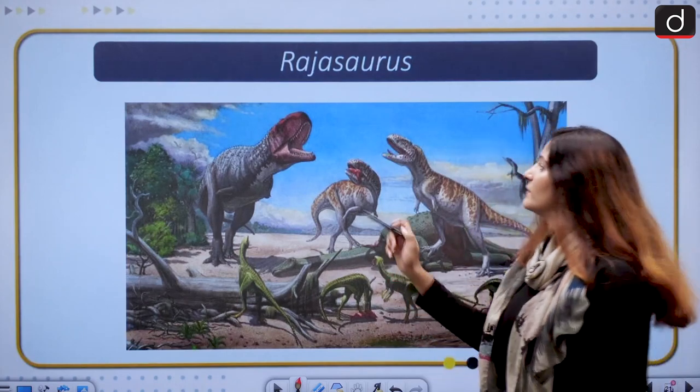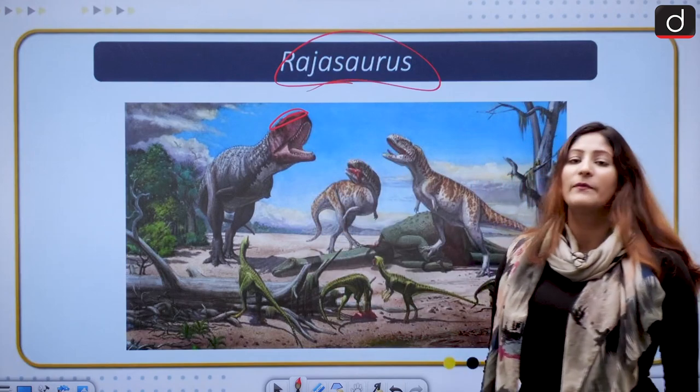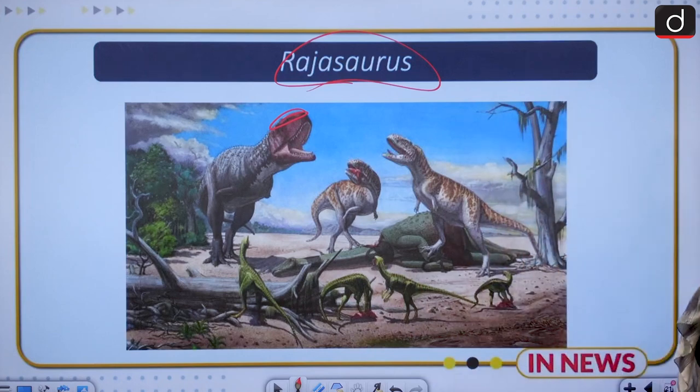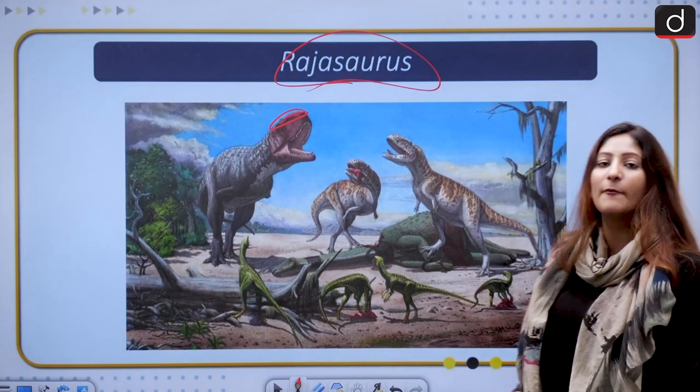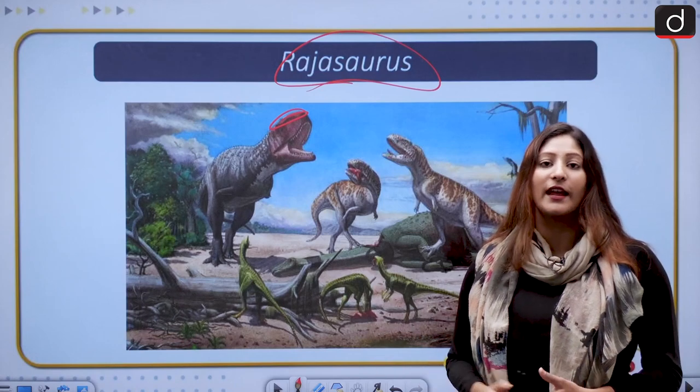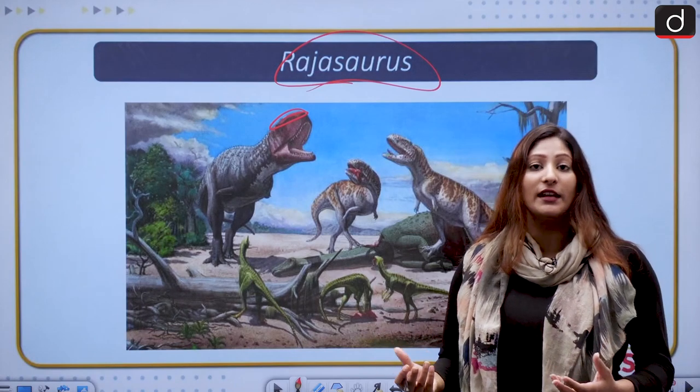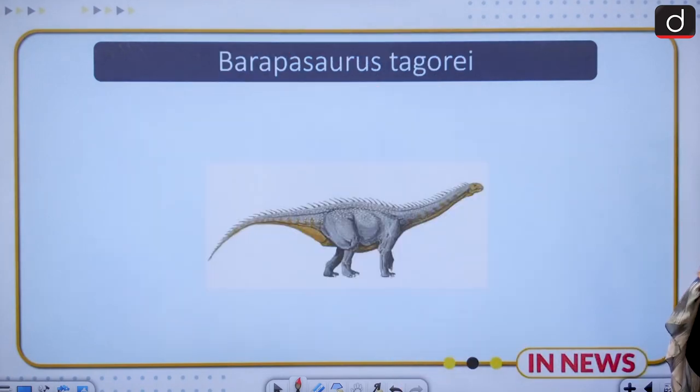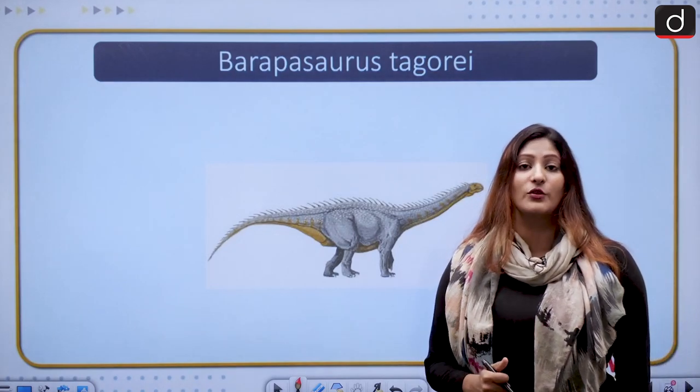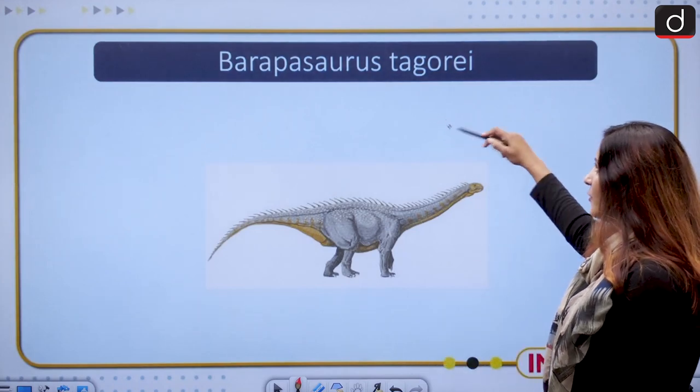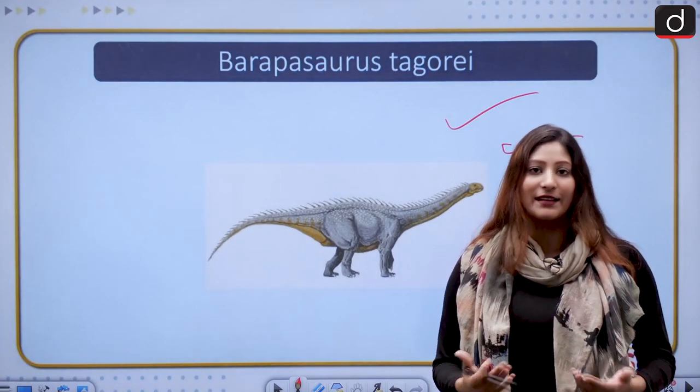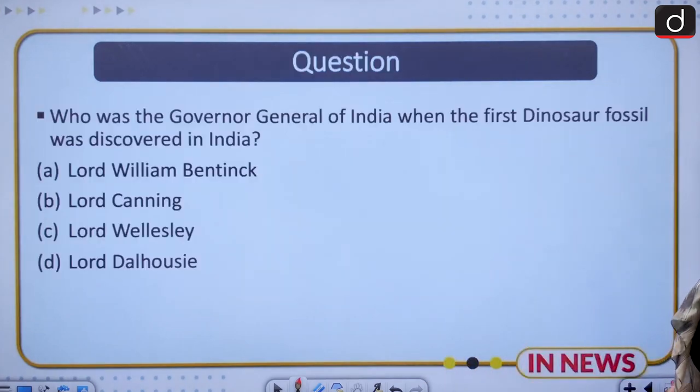Another very important dinosaur which had a horn on its nose is the Rajasaurus. It was discovered in 2003 and was an ambush predator—a carnivorous dinosaur that used to appear suddenly without any warning. The largest dinosaur discovered in India is the Barapasaurus tagori. The most storied dinosaur of Jurassic Park is the T-Rex, which has also been found in India.